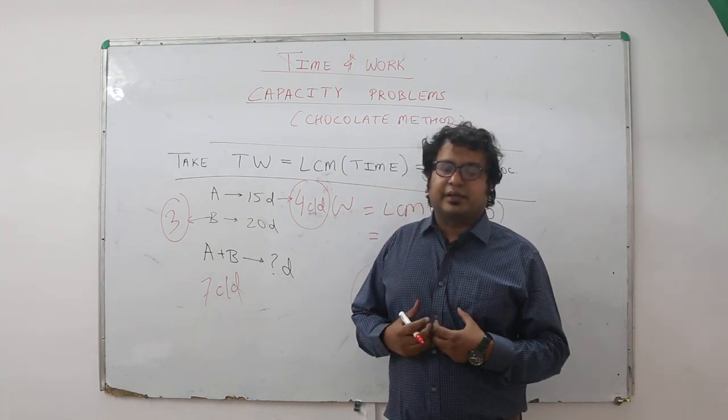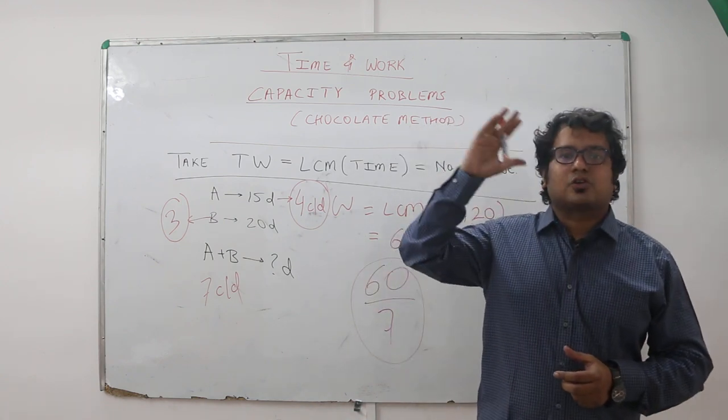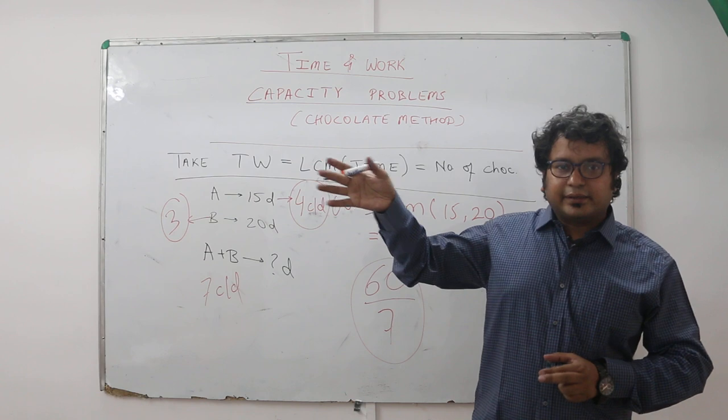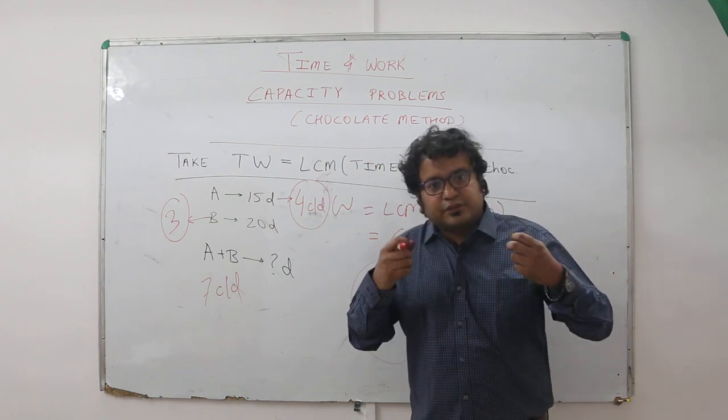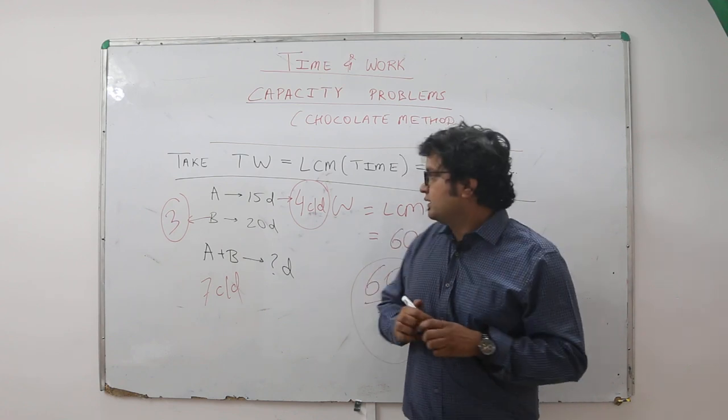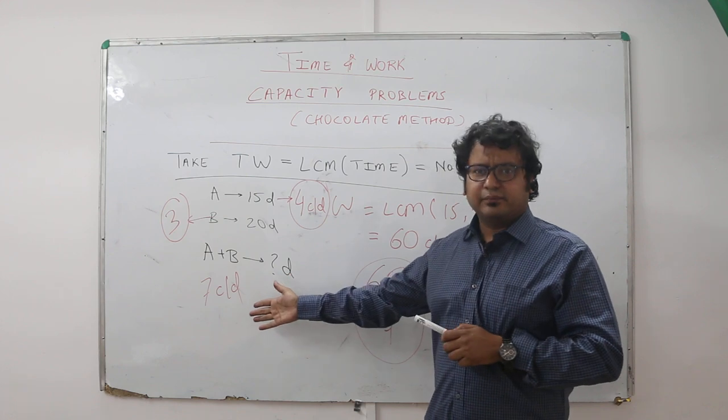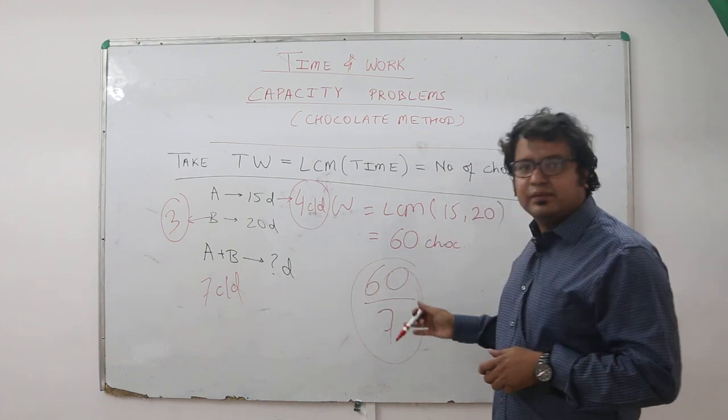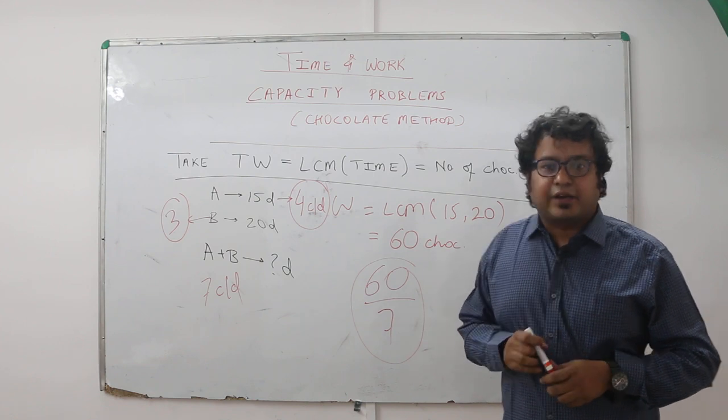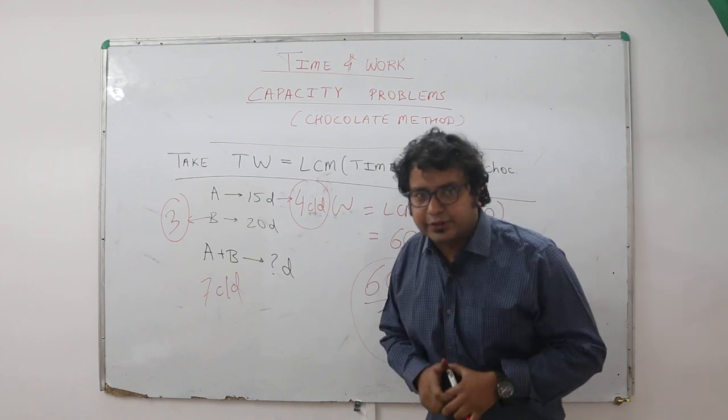Let me sum this up again. What I am saying is simply when time is given, take out the LCM and take it as total number of chocolates to be eaten. It's converting maths into something which we can visualize - eating chocolates, that is work. Now if there are 60 chocolates, A eats 4 per day, B eats 3 per day, together they eat 7 per day. So how much time will they take to complete the work together? 60 by 7. Now this method avoids fractions and makes your solving faster than ever before. I hope this is clear, thank you.